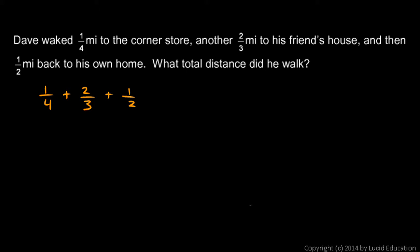And we need to add these, but to add these we need to have the same denominator in each of them. They need to be like fractions. And you can probably tell that if you look at these numbers—the four, the three, and the two—a twelve as a denominator would work well. All of those numbers can divide evenly into twelve.